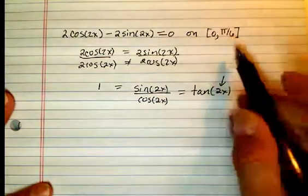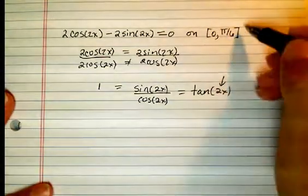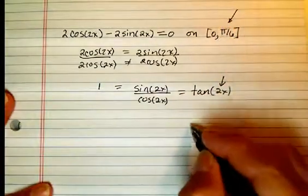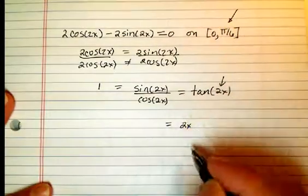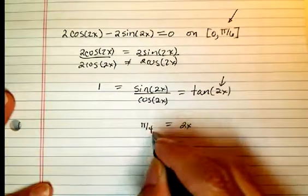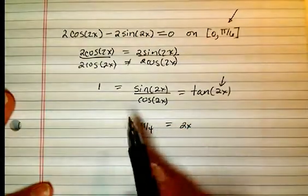Well, let's be careful here because our x is going to be on this interval. So, what we know is that 2x will be equal to pi over 4, because the tangent of pi over 4 is equal to 1.